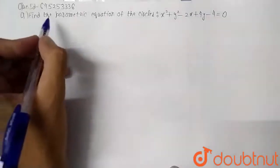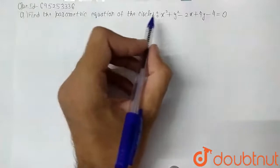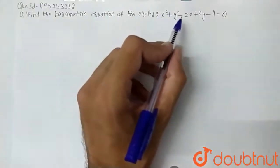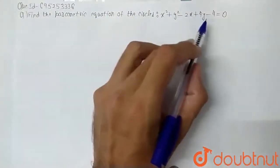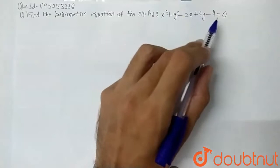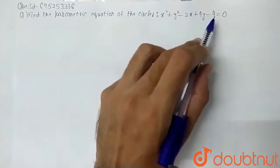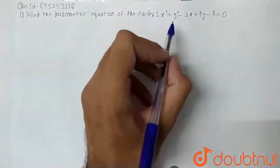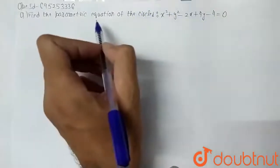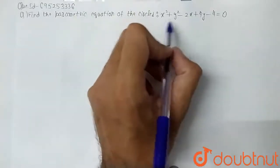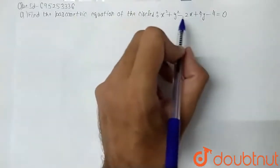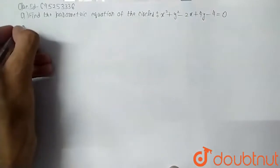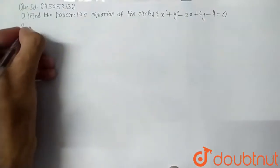Find the parametric equation of the circle x² + y² - 2x + 4y - 4 = 0. In this question, we have to find the parametric equation of this given equation of the circle.